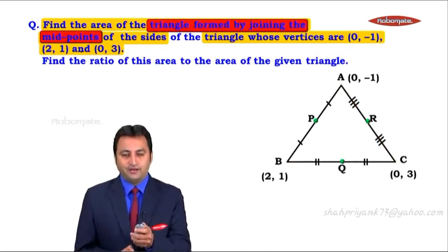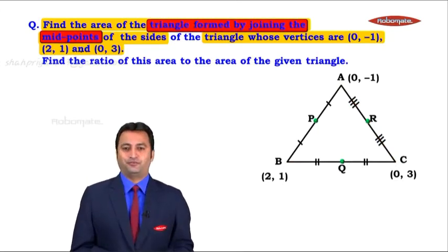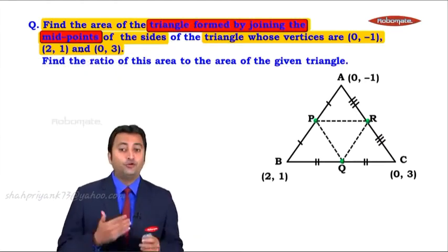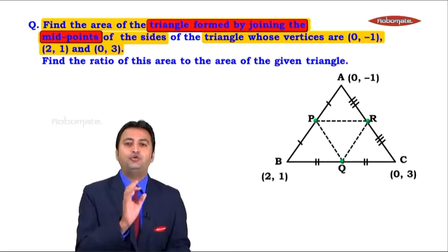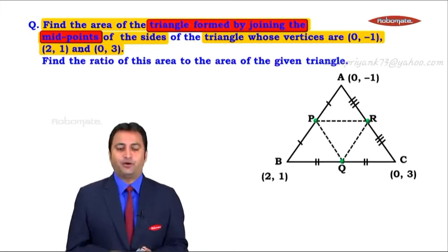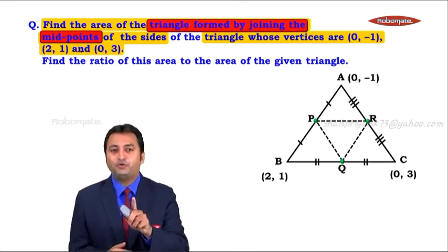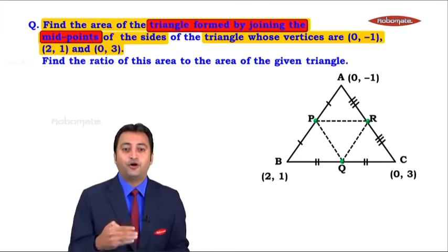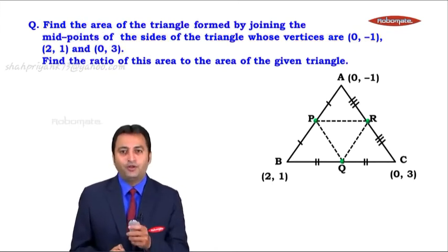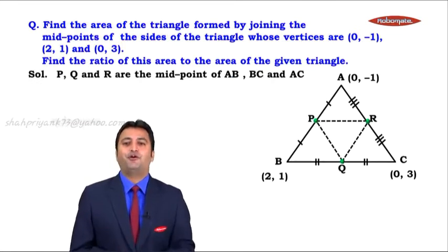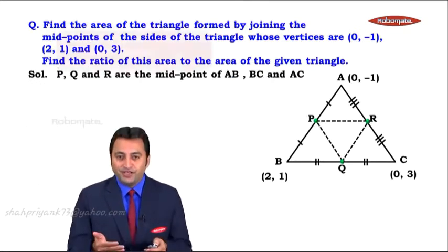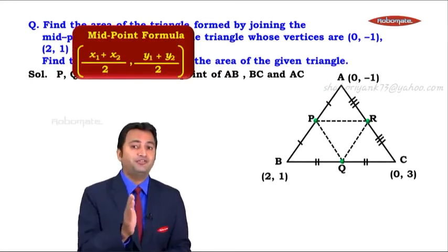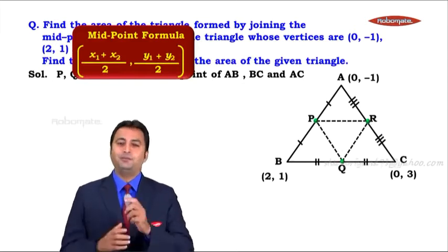Now we need the triangle which is formed by joining these midpoints. So let us create that triangle by joining PQ, QR, and PR — the triangle formed is PQR. We need to calculate the area of triangle PQR. But the coordinates of P, Q, and R are not given, so first we will have to find the coordinates of P, Q, and R by using the midpoint formula: x1 plus x2 upon 2, y1 plus y2 upon 2.